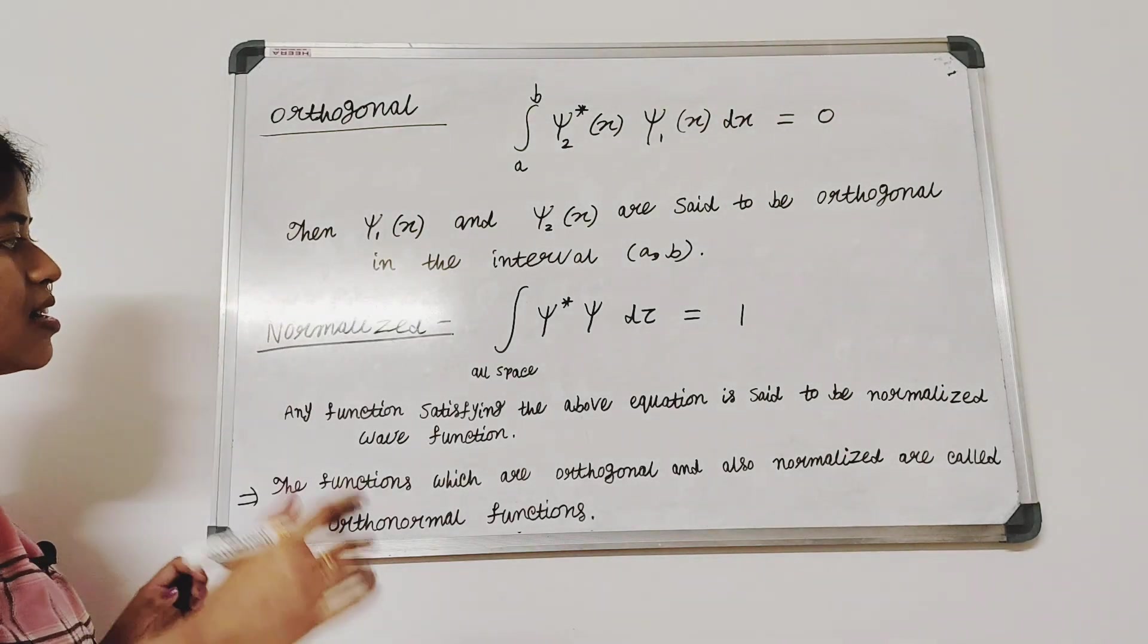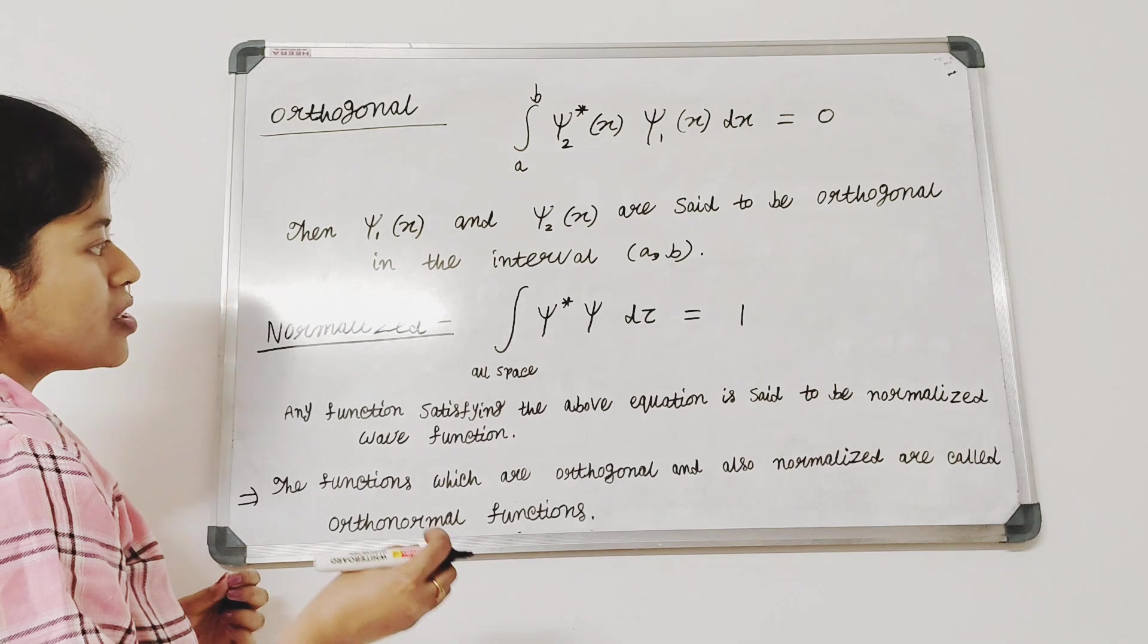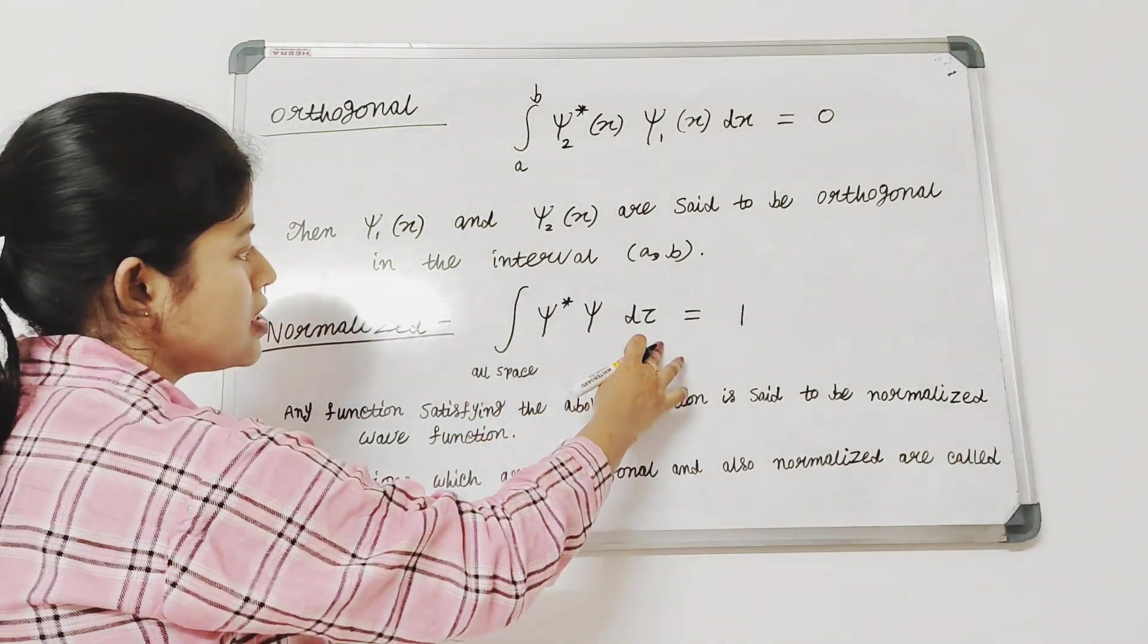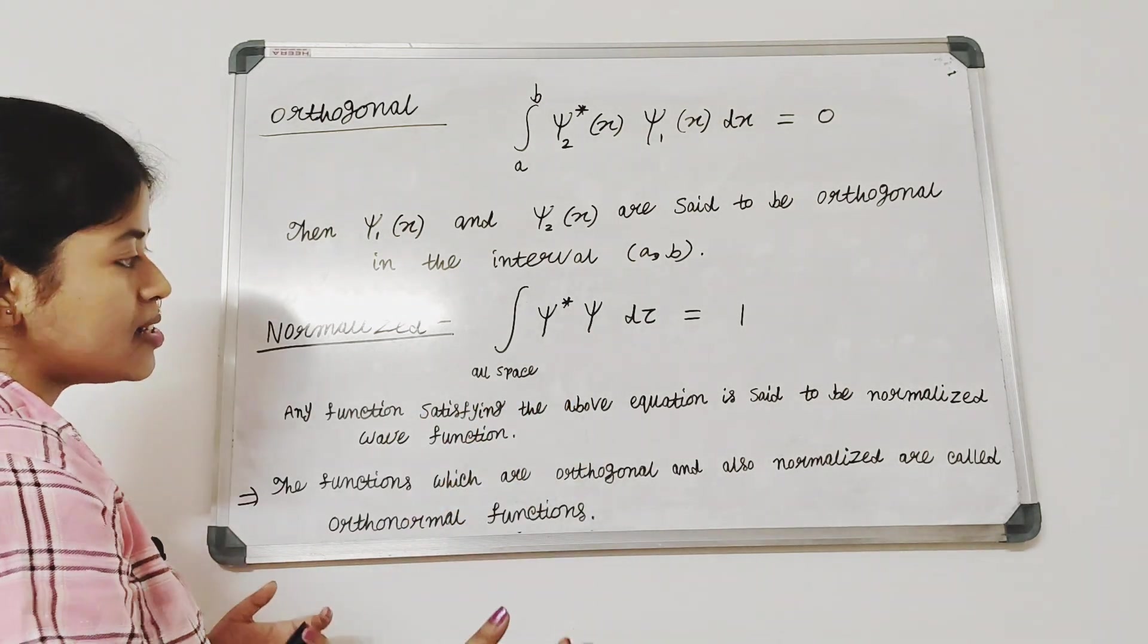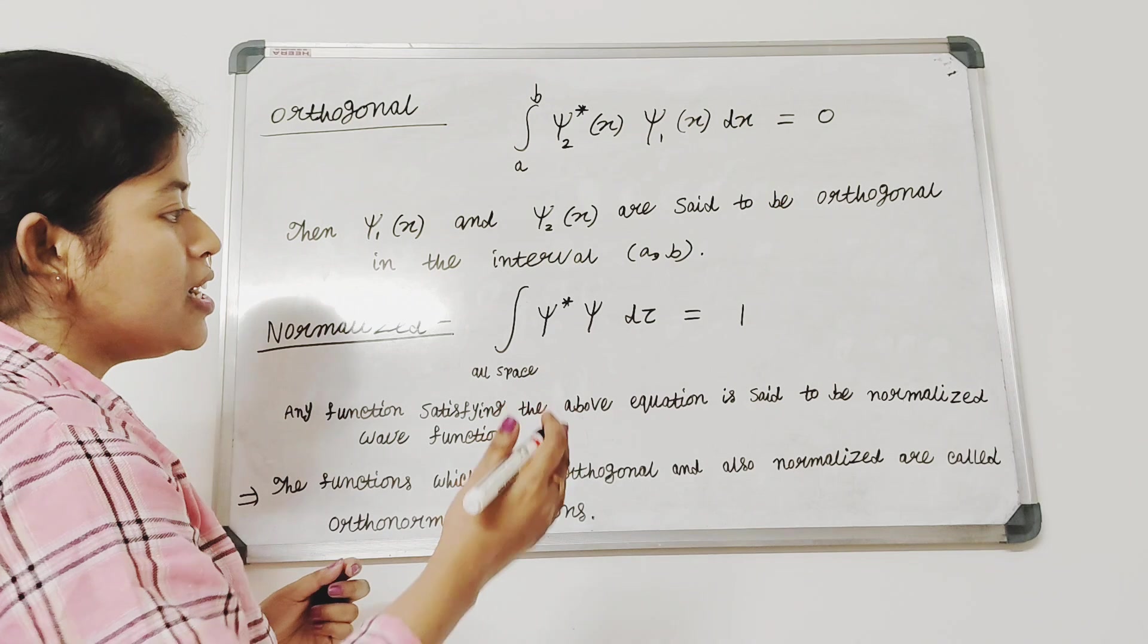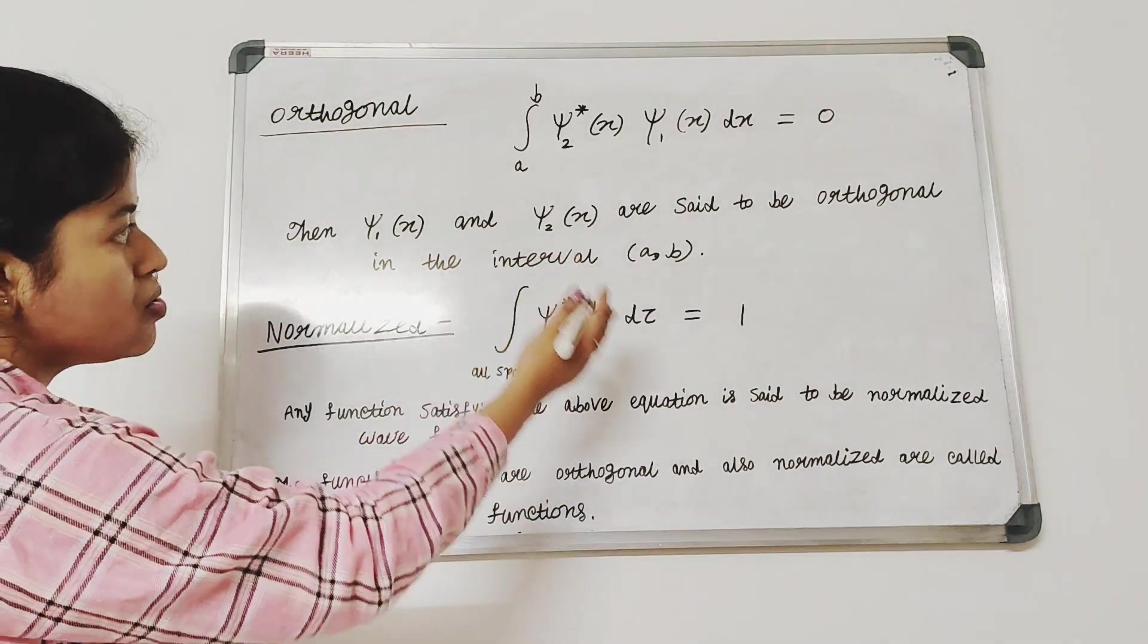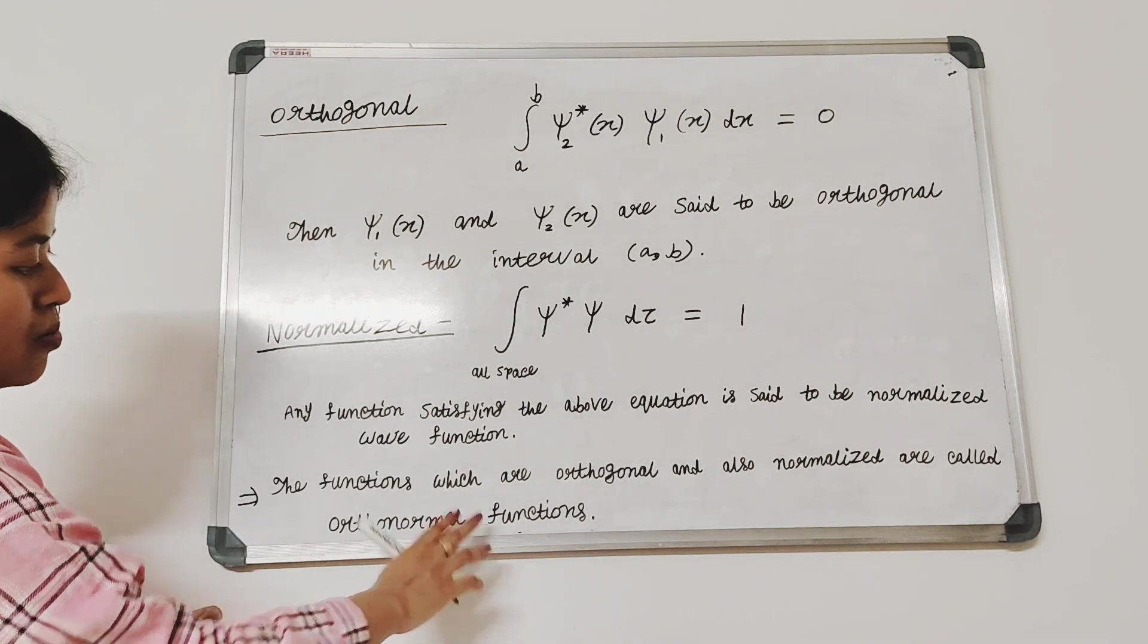And there is another property which is called the normalization property. If the wave function psi satisfies this property that the integration psi star psi d tau is 1 when we integrate psi star psi over the entire space and we get 1, we call that the wave function is normalized. And when the wave functions are orthogonal and also normalized we call this type of wave function as orthonormal functions.